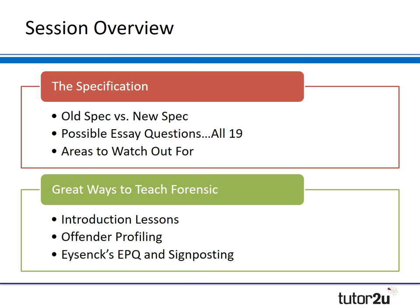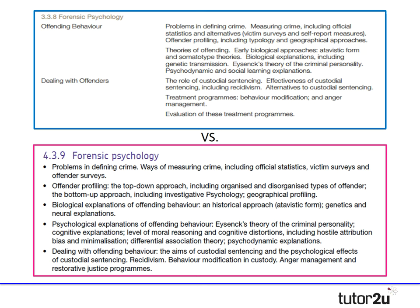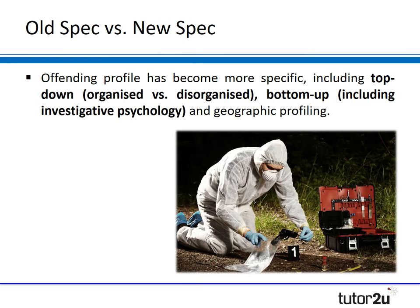Let's start by looking at the specification, comparing the old versus the new spec and what might be different. I've put the old spec at the top of the screen and the new spec at the bottom. There are a few little changes, but AQA has just become a bit more specific in the new spec. In terms of offender profiling, they've highlighted some particular key terms you need to be aware of.